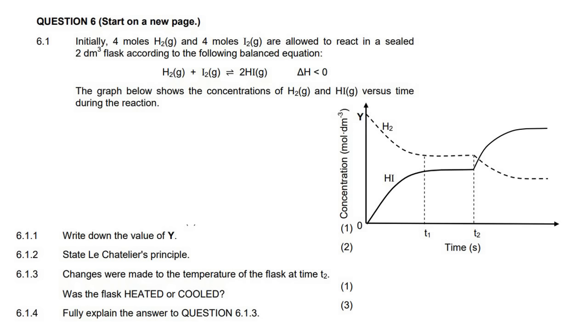Initially, 4 moles of hydrogen and 4 moles of iodine are allowed to react in a sealed 2 decimeter container, according to the following balanced reaction. The graph below shows the concentration versus time. So on this graph, they're not showing us the iodine, they're just showing us the hydrogen and this part over here. So the first question says, write down the value of y. Now that is a concentration value. We know that concentration is equal to n over v. So we know that the starting moles of hydrogen is 4 and the volume of the container is 2, and so that would give us 2 moles per decimeter.